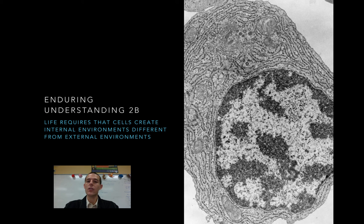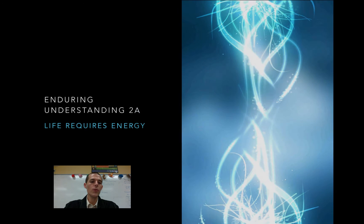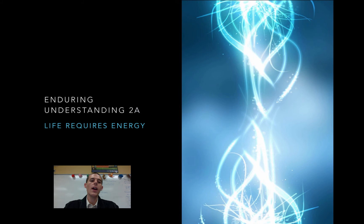It needs its internal environment to be separate from the outside environment. So, this first part of our unit is going to be all about the cell membrane. We'll move from the cell membrane to 2A, which is that life requires energy. Living systems, if they are going to grow, reproduce, and maintain homeostasis, have to be able to take in energy.